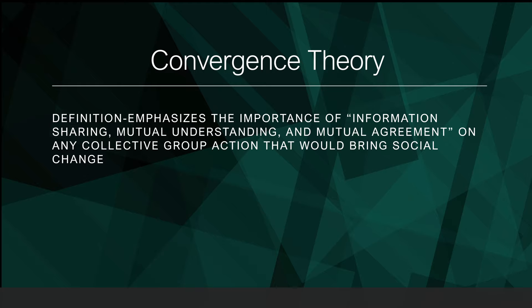The Convergence Theory emphasizes the importance of information sharing, mutual understanding, and mutual agreement on collective group action that would bring social change. It is based on the perspective that individual perceptions and behavior are influenced by the perceptions and behaviors of members of the same group, such as professional associations, colleagues, and family members, as well as people in one's personal network such as peers, friends, or professional acquaintances.